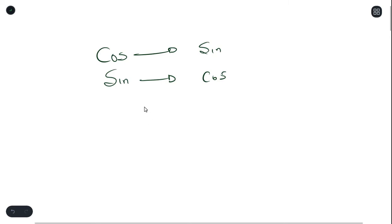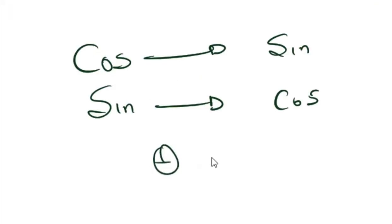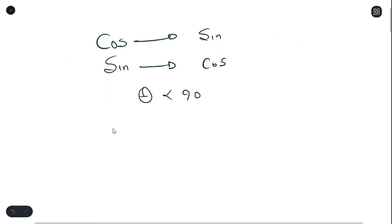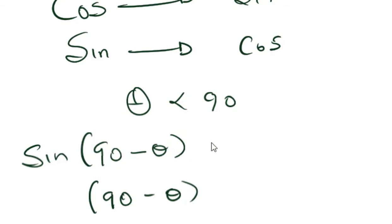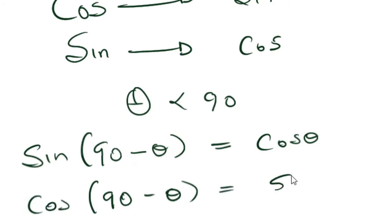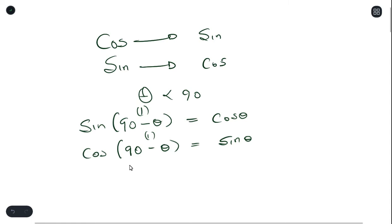To do this, you first need to understand that theta is an acute angle, as we've discussed in reduction formula and other trig sections. Theta is less than 90 because it's in the first quadrant. To change from sine to cosine, sine of (90 minus theta) becomes cos theta, and cos of (90 minus theta) also becomes sine theta. Sine and cosine are both positive in the first quadrant.